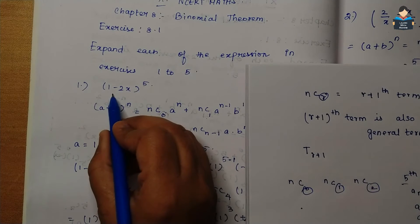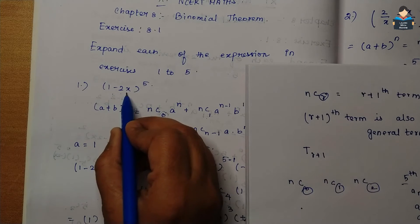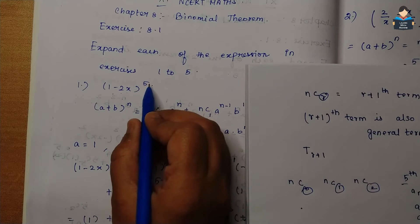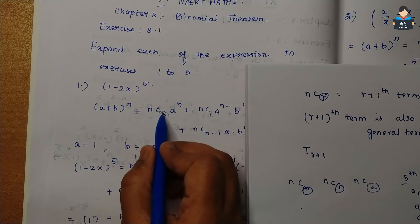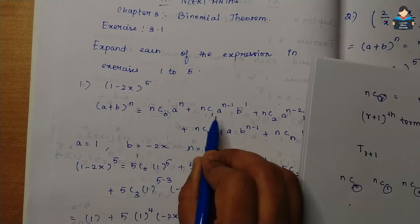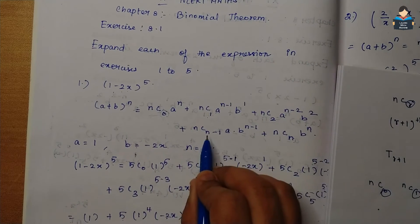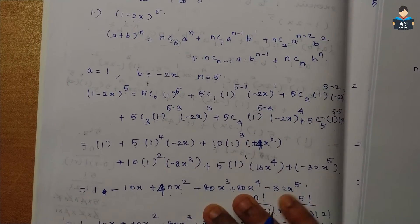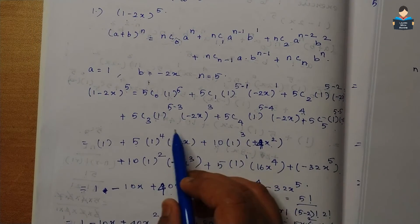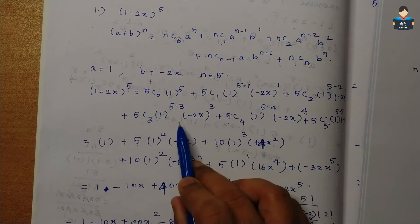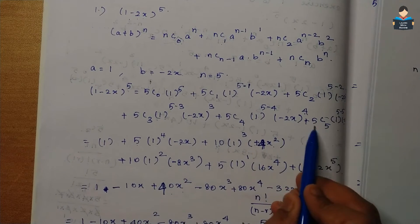We will substitute (1 - 2x)^5. So the value of n is 0, 1, 2, 3, 4, 5 — so now we have 5.